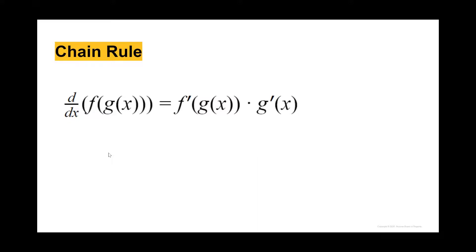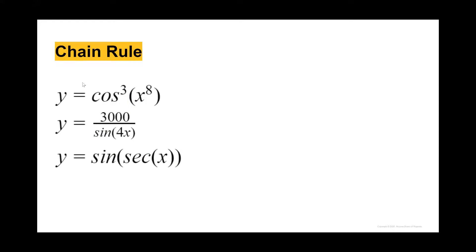For the chain rule, you have f of g of x. The derivative is f prime of g of x times g prime of x. We have some examples applying the chain rule, so I'm going to give you some time. You can pause the video and go through these on your own and then check the answers to see where you went wrong or if you got them right.